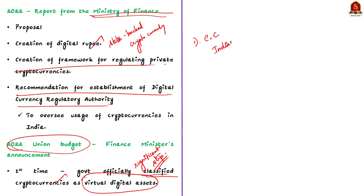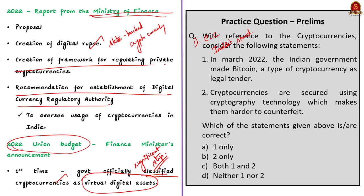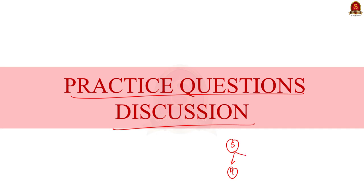Now with these points in mind, let us move on to the practice prelims question discussion. Today we have five prelims questions. I will solve four of them and one is a quiz question for you. Let us take the first question: which among the following are Kharif crops?